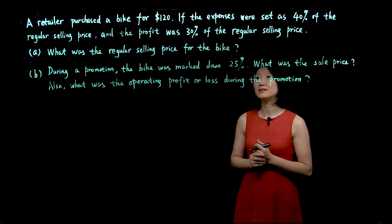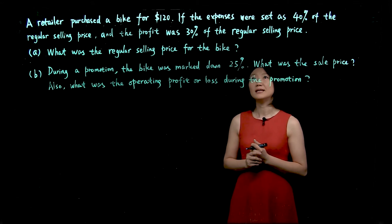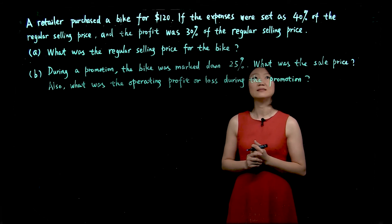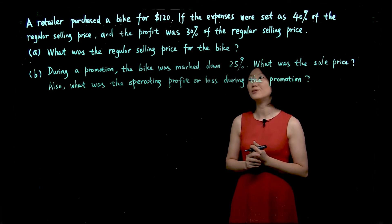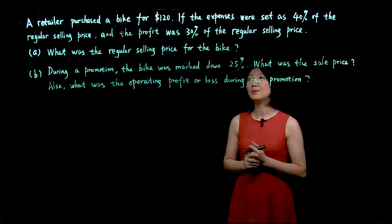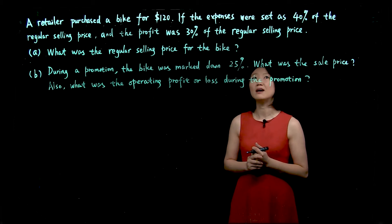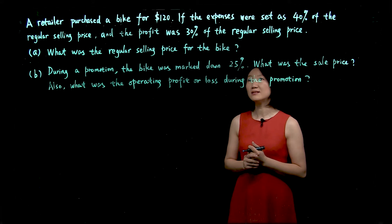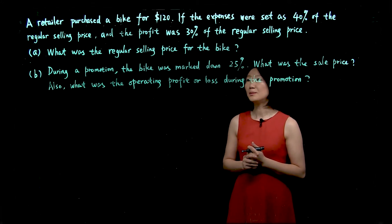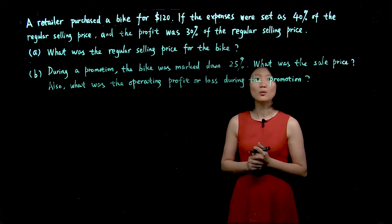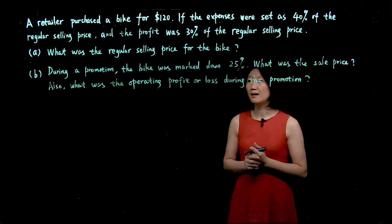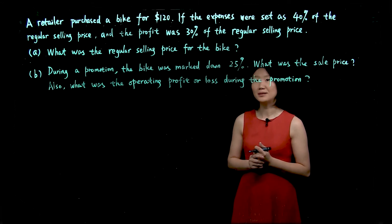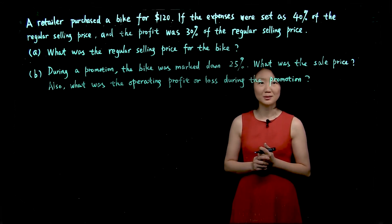A retailer purchased a bike for $120. The expenses were set as 40% of the regular selling price, and the profit was 30% of the regular selling price. A: what was the regular selling price for the bike? B: during a promotion, the bike was marked down 25%. What was the sale price? Also, what was the operating profit or loss during the promotion?